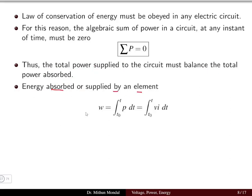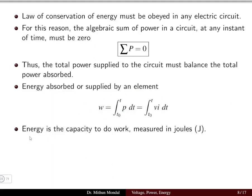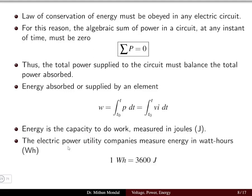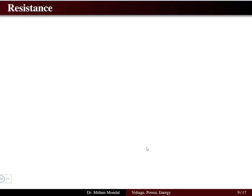Energy absorbed or supplied by an element is given by the integral of power over time: W equals the integral of V·i·dT from T0 to T. Energy is defined as the capacity to do work and is measured in joules. Electric power utility companies measure energy in watt-hours, where 1 watt-hour equals 3600 joules.